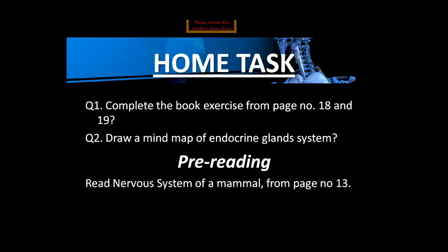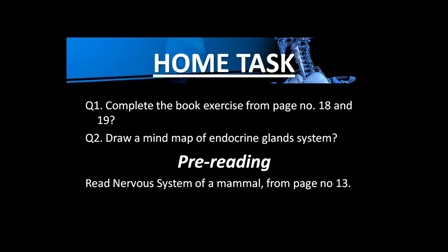For your home task: Question one — complete the book exercise from pages 18 and 19 of Amazing Science Class 8. Question two — draw a mind map on the endocrine gland system. Reading task — read the nervous system of a mammal from page 13 of your book Amazing Science.